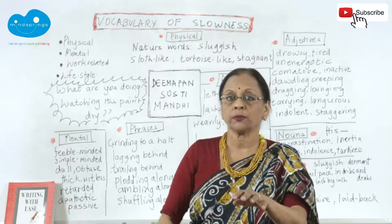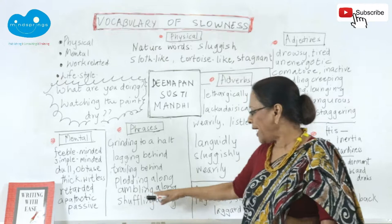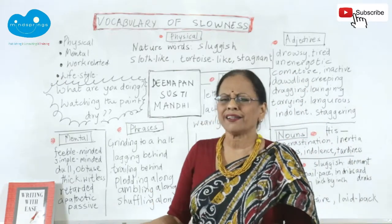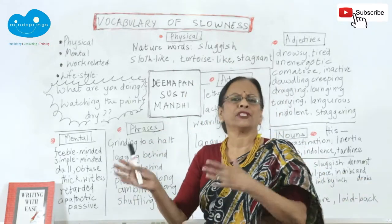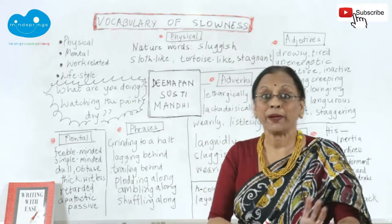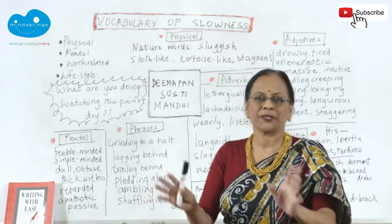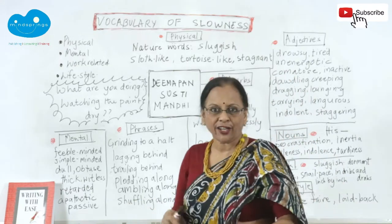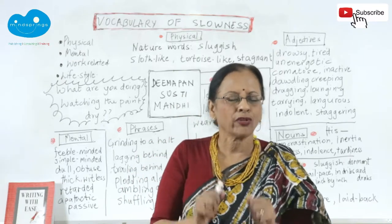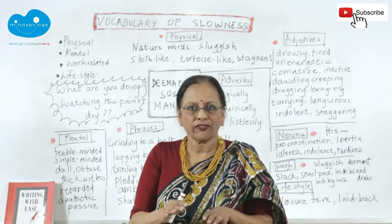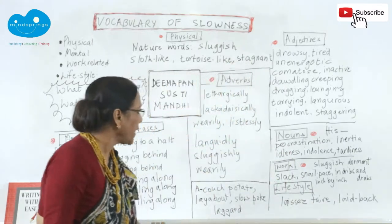That is plodding. Ambling along — bindas, lazy, just like that, going on with time pass — on the beach, just going without purpose. And shuffling along — shuffling along is slowly, slowly moving, then stop, then shuffle shuffle shuffle stop. Shuffling along means moving very slowly with intermittent pauses. These are all phrases expressing slowness.